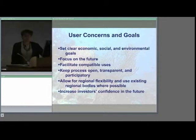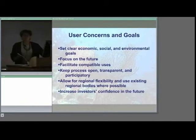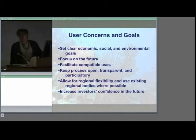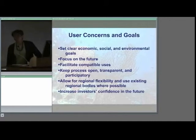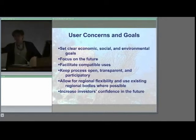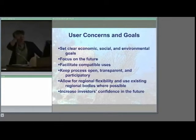Keep the process open, transparent, and participatory — that's classic stakeholder engagement. Allow for regional flexibility and use existing regional bodies wherever possible. They were very afraid of this becoming a centralized federal bureaucracy based in Washington telling everybody what to do with their coasts and oceans, so they wanted it devolved to a regional level. It goes beyond any individual state because we're talking about going beyond state waters and there's obvious cross-flow, so they saw it as a regional issue and wanted to build on existing regional bodies.